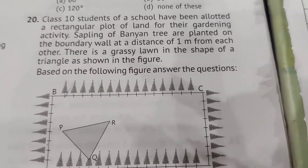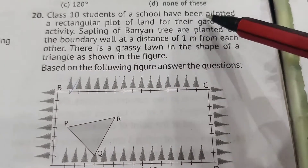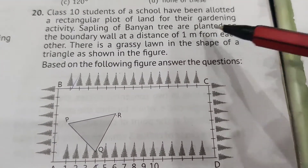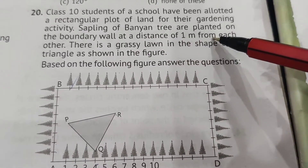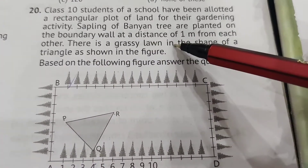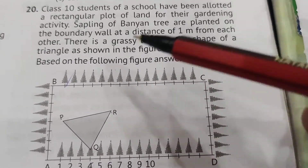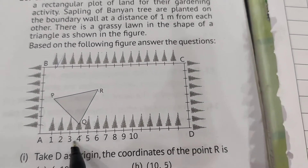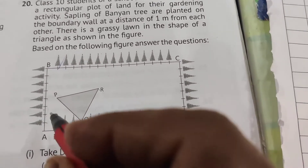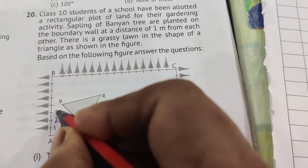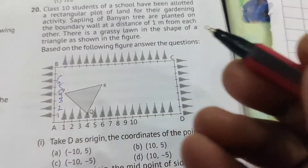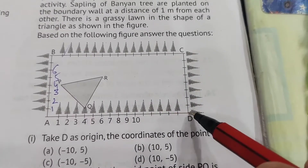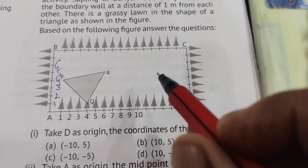New case study: Class 10 students of a school have been allotted a rectangular plot of land for their gardening activity. Saplings of banyan trees are planted on the boundary wall at a distance of one meter from each other. There is a grassy lawn in the shape of a triangle as shown in the figure. The coordinates go one, two, three, four, five, six and so on. If A is the origin, it is the first quadrant; if D is the origin, it is the second quadrant.